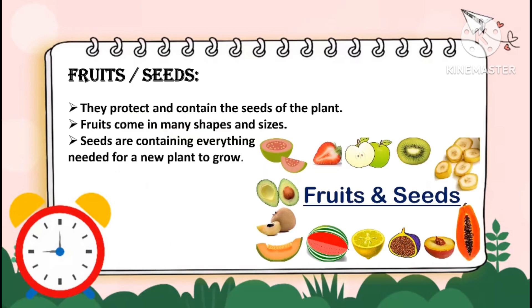Fruits and seeds. Fruits protect and contain the seeds of the plants. Fruits come in many shapes and sizes, containing everything needed for a new plant to grow.